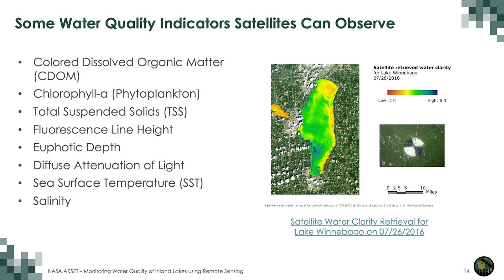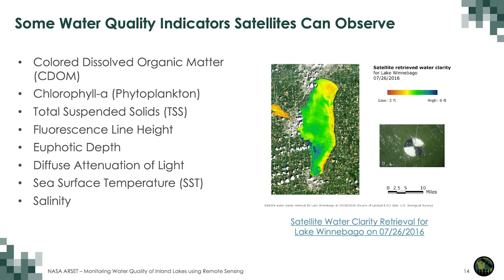Water quality indicators that satellites can observe include: colored dissolved organic matter (CDOM), chlorophyll-a or phytoplankton concentration, total suspended solids, fluorescence line height (relative radiance leaving the water surface), euphotic depth (the depth to which light can penetrate and vegetation can grow), diffuse attenuation of light at a particular wavelength, sea surface temperature, and salinity.